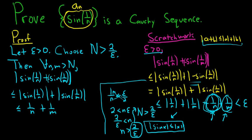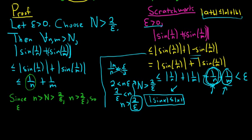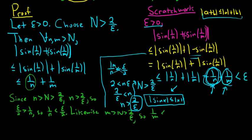Now let's formalize our choice of N. Since little n is bigger than capital N, which is bigger than 2 over epsilon, we have n greater than 2 over epsilon. Solving for 1 over n, we get 1 over n less than epsilon over 2. Likewise, little m is bigger than capital N, which is bigger than 2 over epsilon, so 1 over m is also less than epsilon over 2.